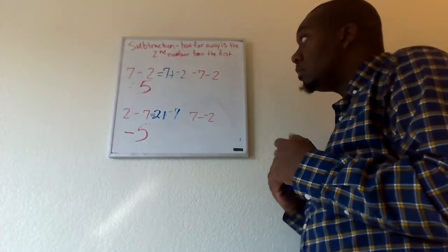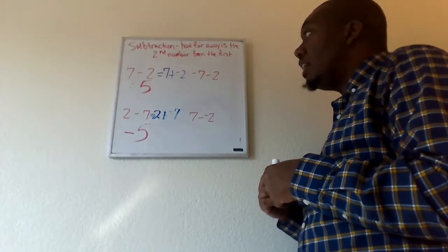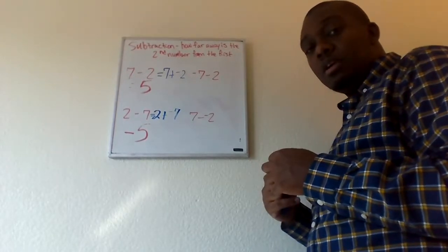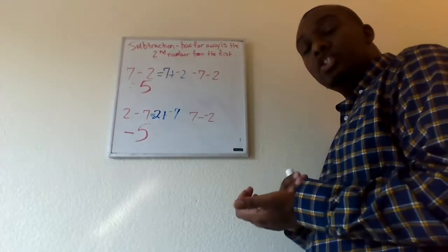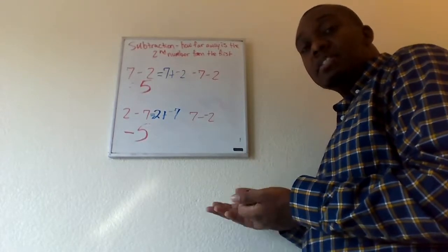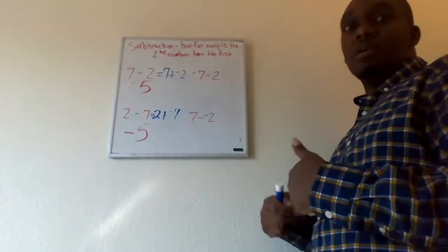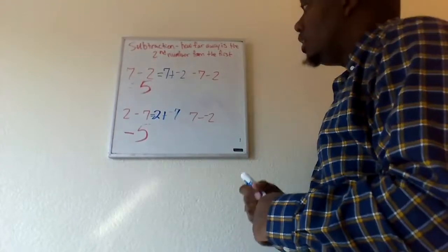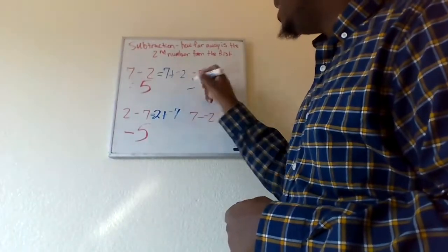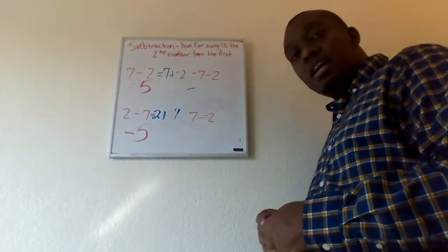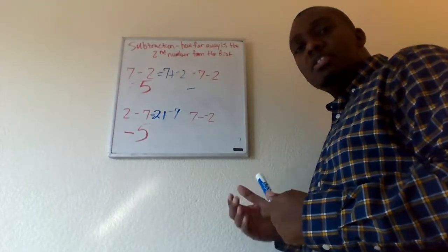So, let's look at it when our first number is negative to start off with. Oh. Hmm. So, we have negative seven minus two. In other words, how far is two from negative seven? Well, again, we have to go down in order to get there, right? So, our answer would have to start off as negative.